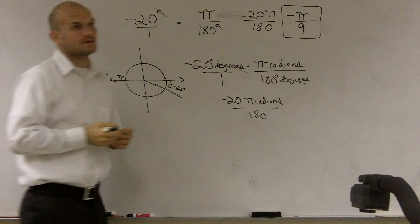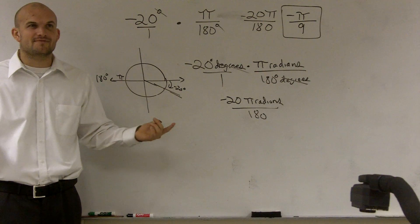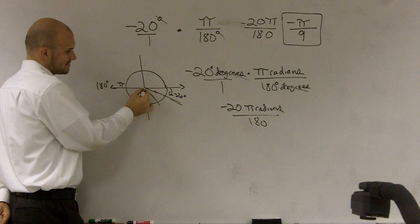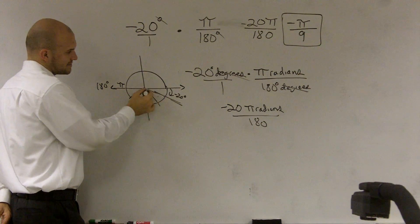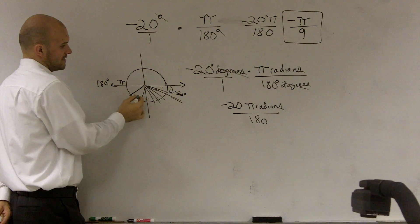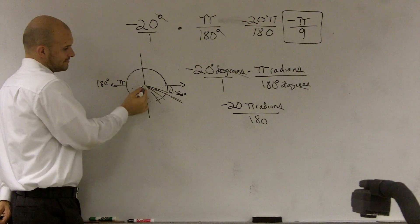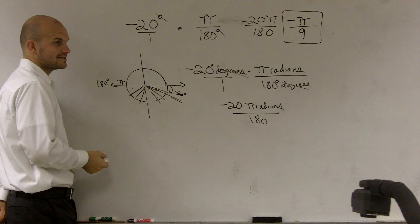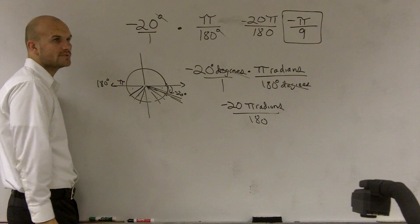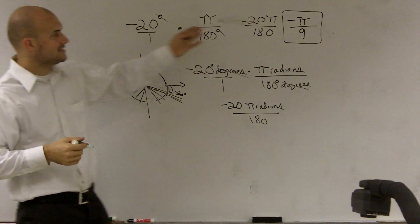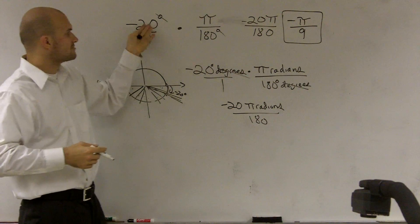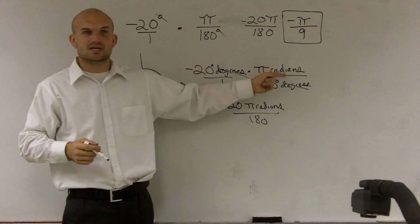That's where it's located. Think about it — where would negative pi over 9 be? If I was to break this into ninths, going down one unit, negative one of them is roughly right in that area. It's the same thing as negative 20 degrees. So to go from degrees to radians, just make sure you multiply by pi over 180. Make sure the 180 is on the bottom because we want the degrees to cancel out. The degrees cancel out, so we're just left with radians.